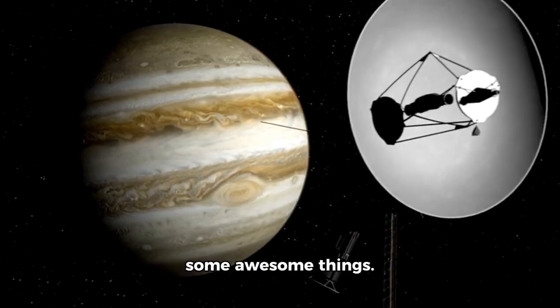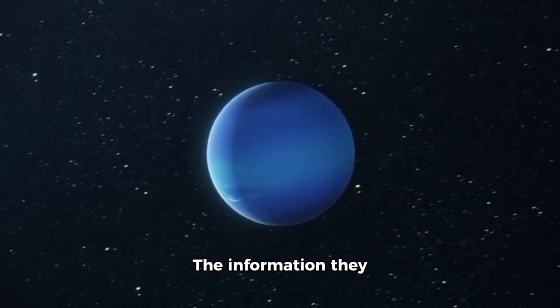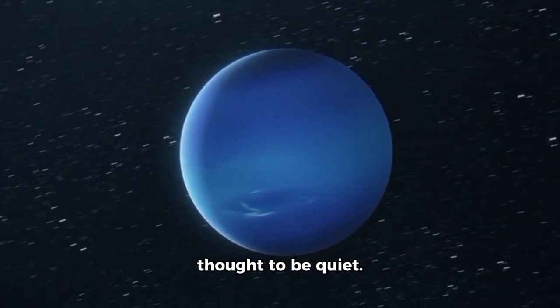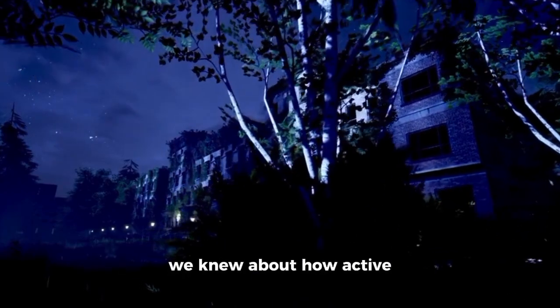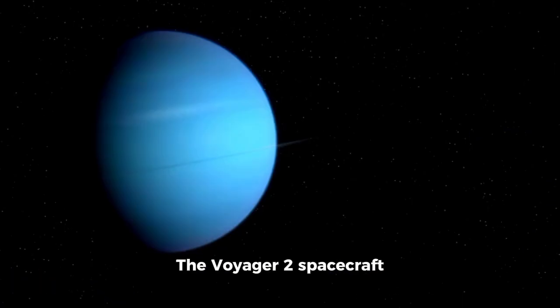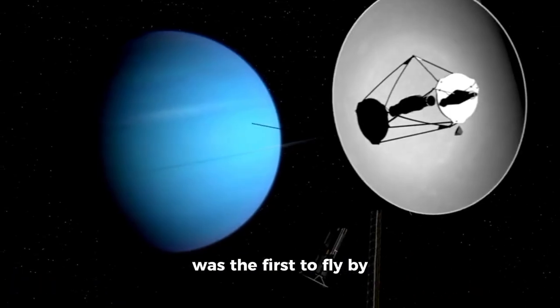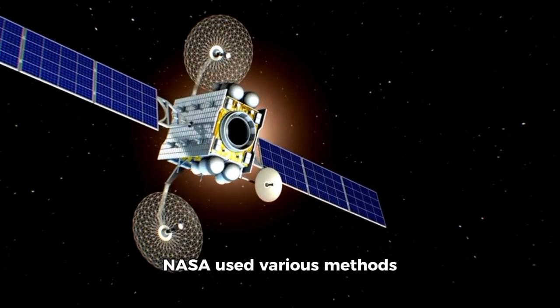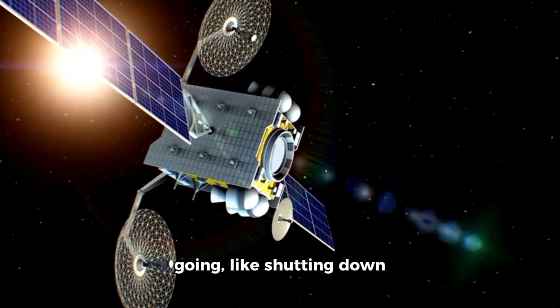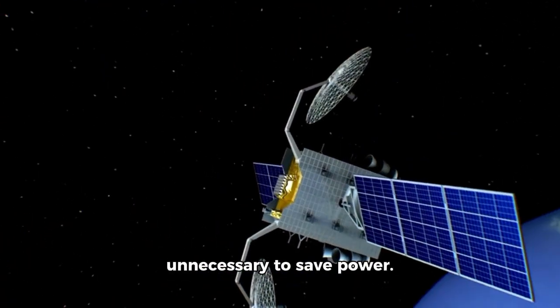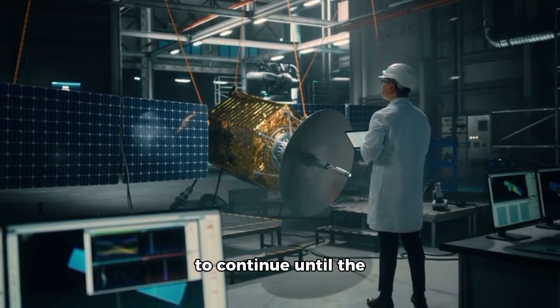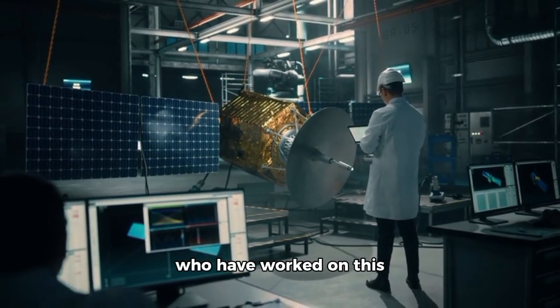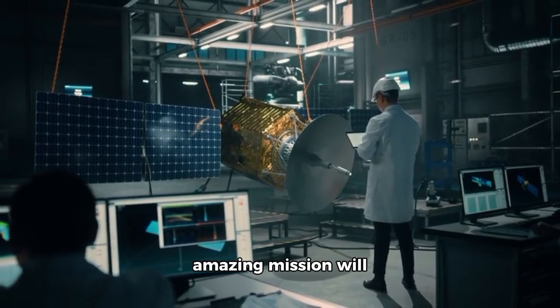Voyager 1 and 2 have done some awesome things. The information they uncovered about Jupiter and Saturn's moons, which no one already knew, was thought to be quiet. These finds changed what we knew about how active these moons are. The Voyager spacecraft were the first to fly by both Uranus and Neptune. NASA used various methods to keep these spacecraft going, like shutting down systems that were unnecessary to save power. The mission is expected to continue until the year 2030.